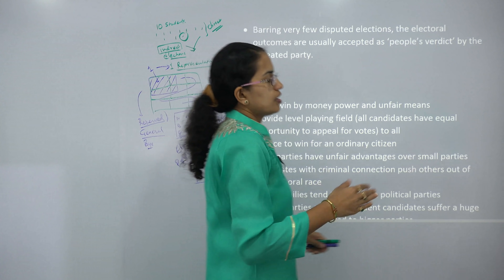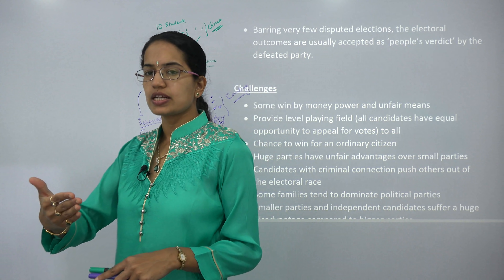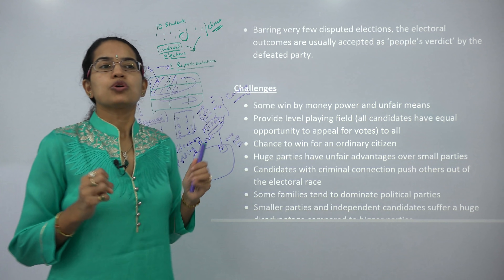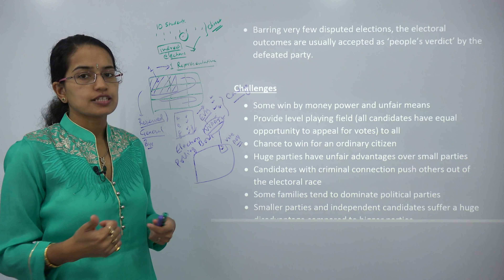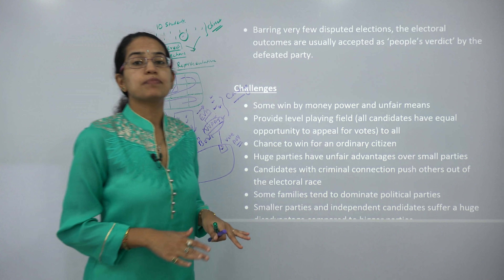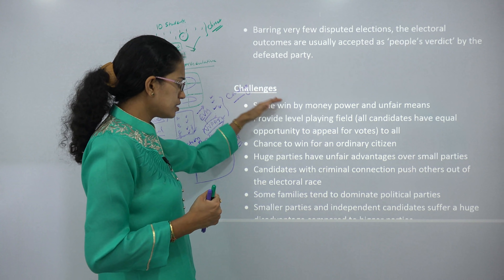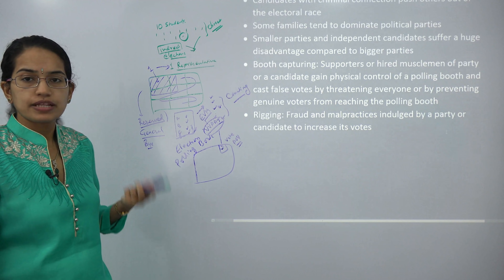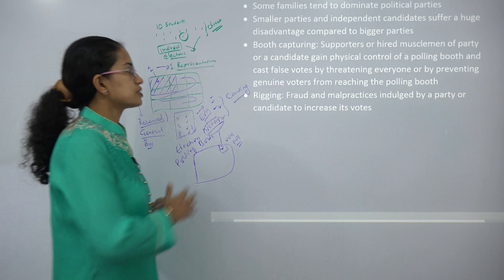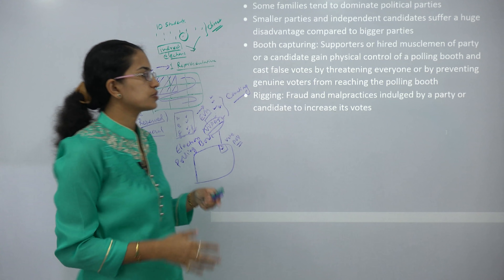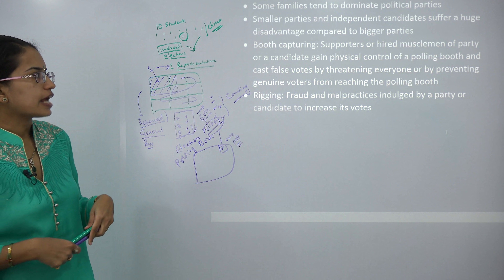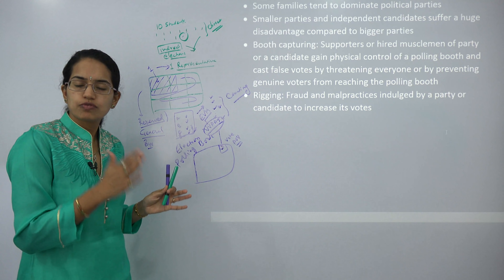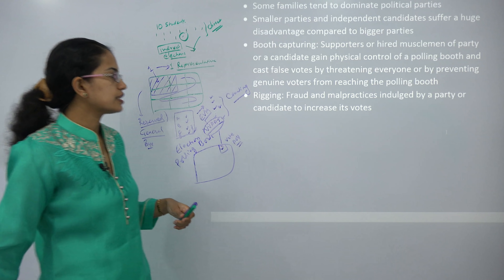The challenges to Indian democracy include people with money power getting undue advantage, independent candidates lacking resources compared to those backed by large parties, candidates with criminal backgrounds using muscle power, and certain families dominating the political scenario. There are also issues of booth capturing — using muscle power to physically capture a booth and create false votes — and rigging, which involves malpractices indulged in by a party to manipulate election results.